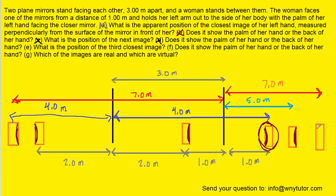We just have to figure out whether it's the back of her hand or the palm of her hand. We can see that we're forming an image based on this object right here — her palm is facing the mirror right here, and so in the reflection that would end up pointing in that orientation. So she would indeed see the palm of her hand in this third image. The distance behind the nearer mirror to that third image is seven meters — the correct answer to part E. And as noted, it would be showing the palm of her hand, so that answers part F as well.